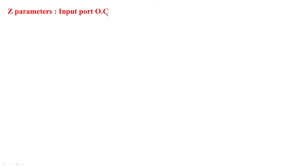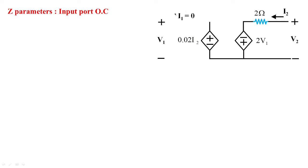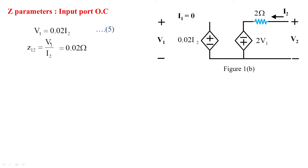When the input port is open-circuited (i1 = 0), the 1-ohm resistor becomes dummy and v1 is measured directly across the dependent voltage source 0.02·i2. So v1 = 0.02·i2 (equation 5), a direct measurement from the network. This gives z12 = v1/i2 at i1 = 0, which equals 0.02 ohms (equation 5).